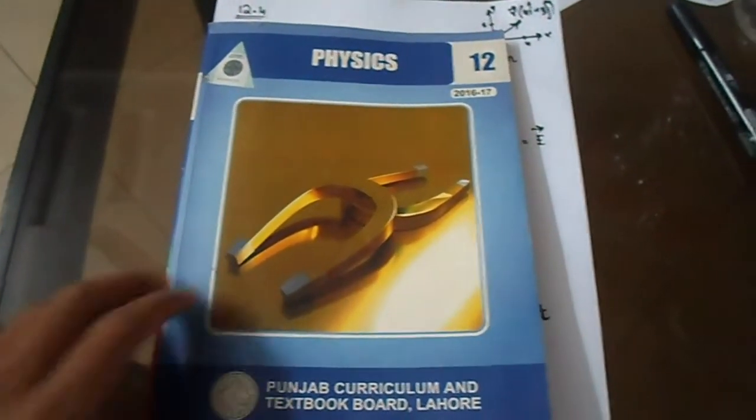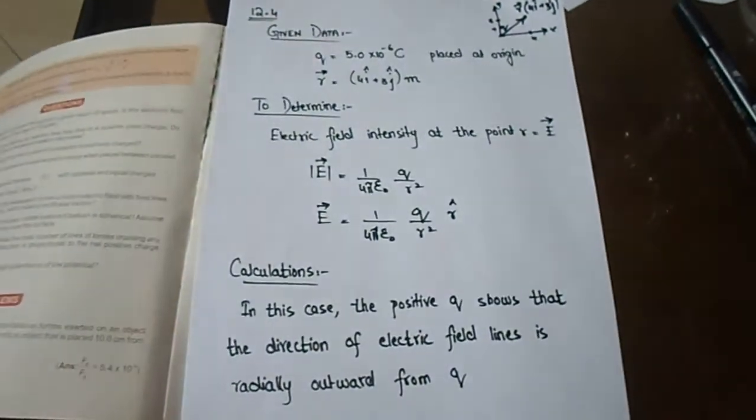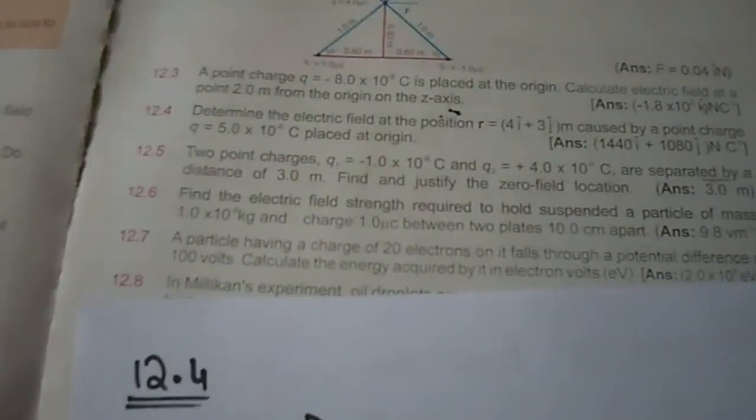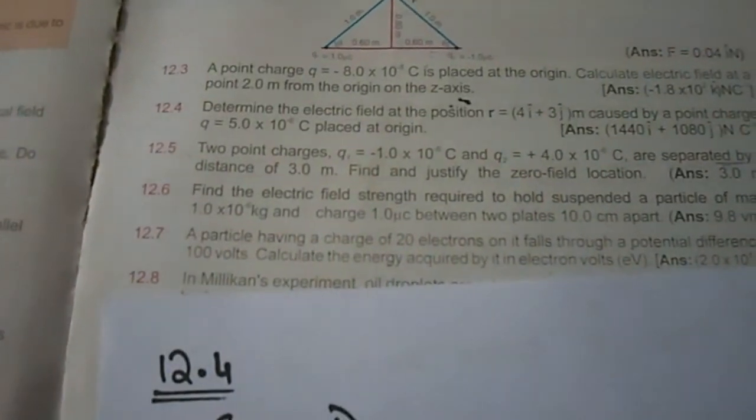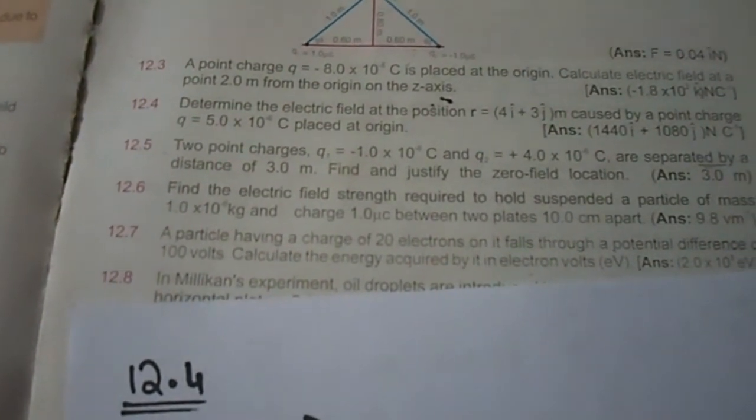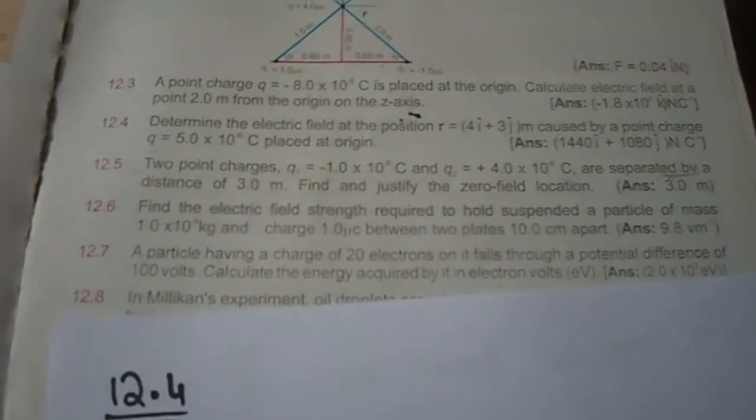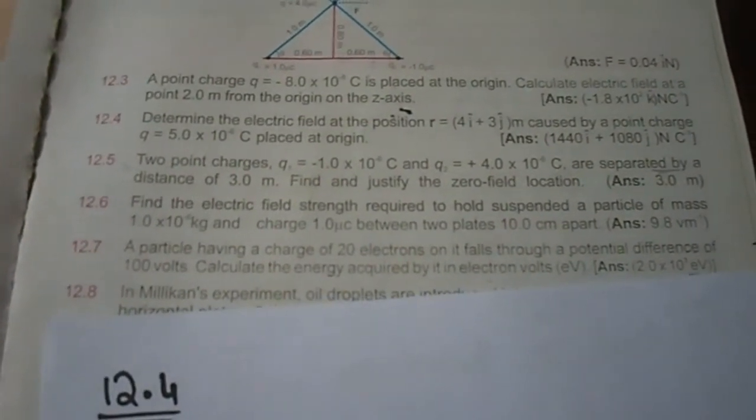Bismillahirrahmanirrahim. Today we will do second year physics chapter number 12 electrostatics problem number 12.4. We have to determine the electric field at the position r equals 4i plus 3j meters caused by a point charge q equals 5 into 10 to the power minus 6 coulomb placed at origin.